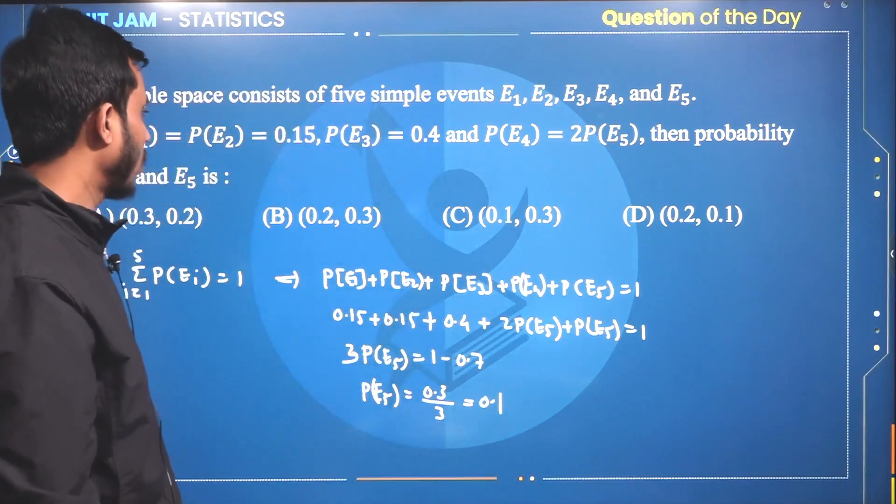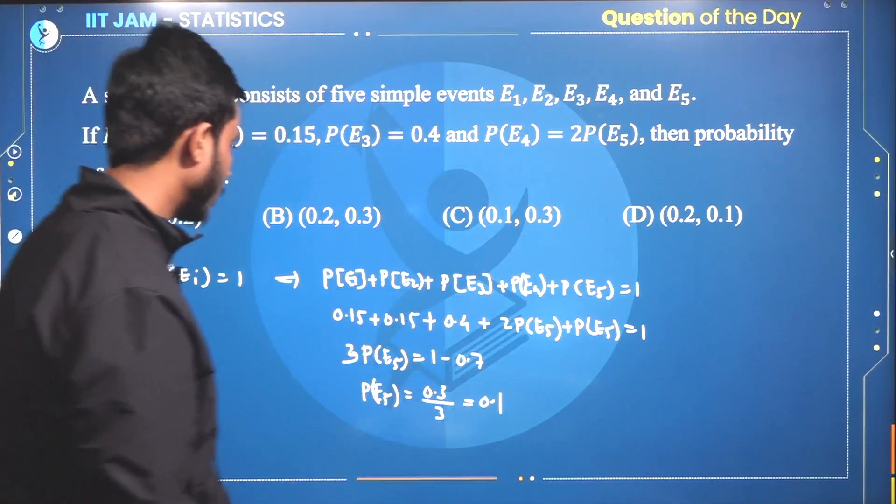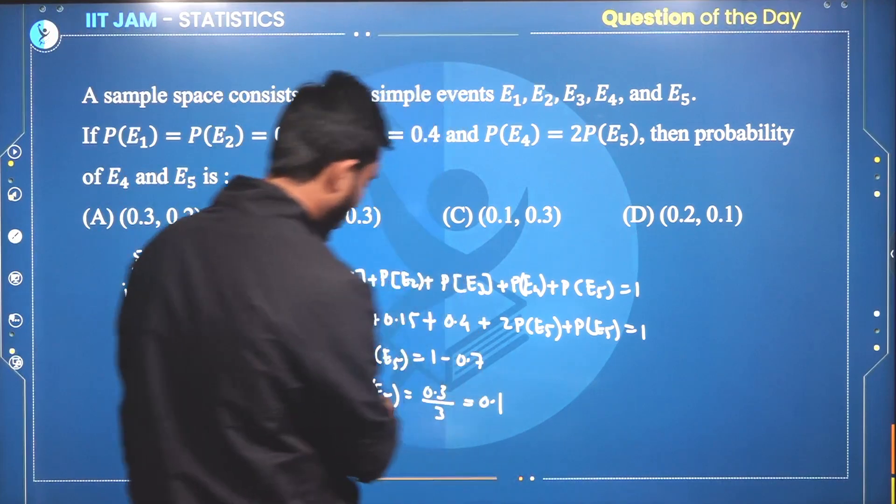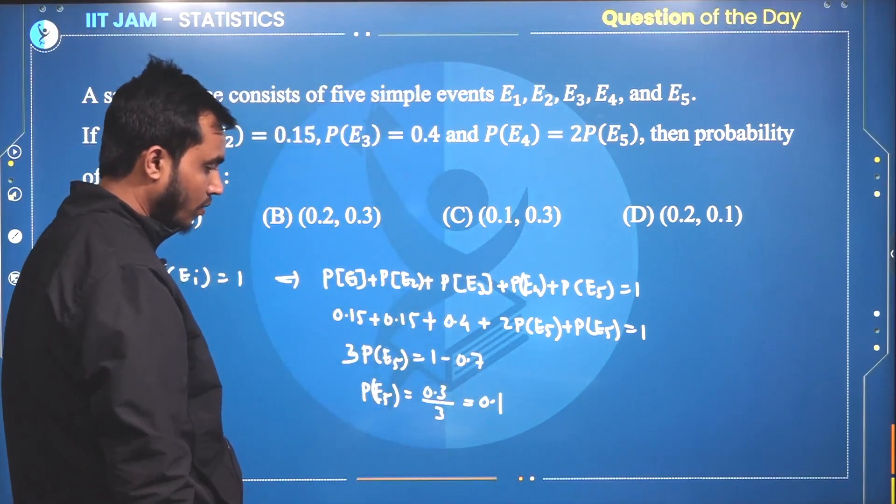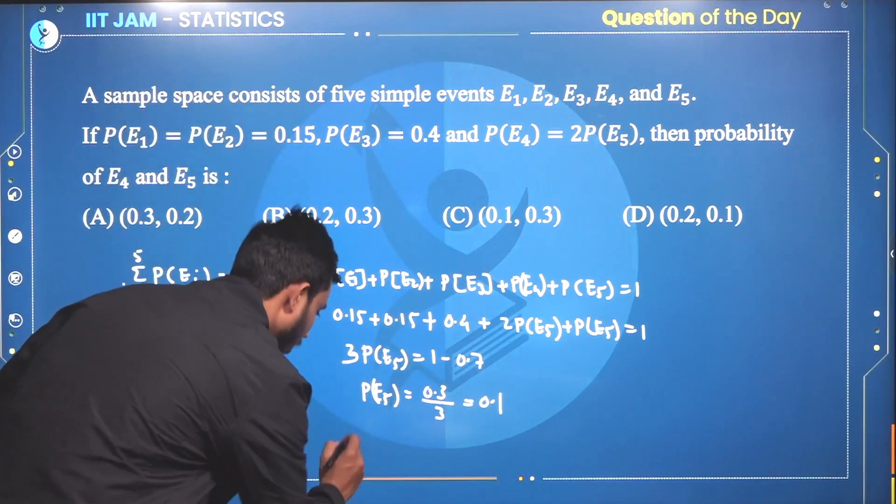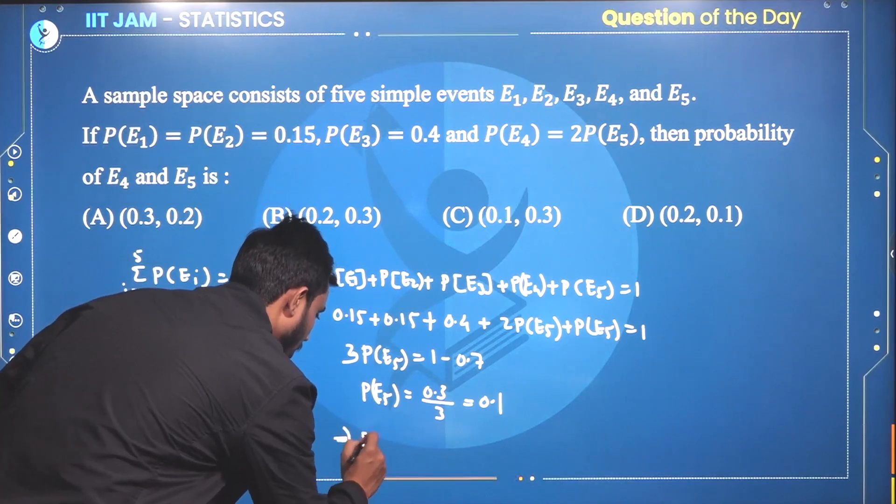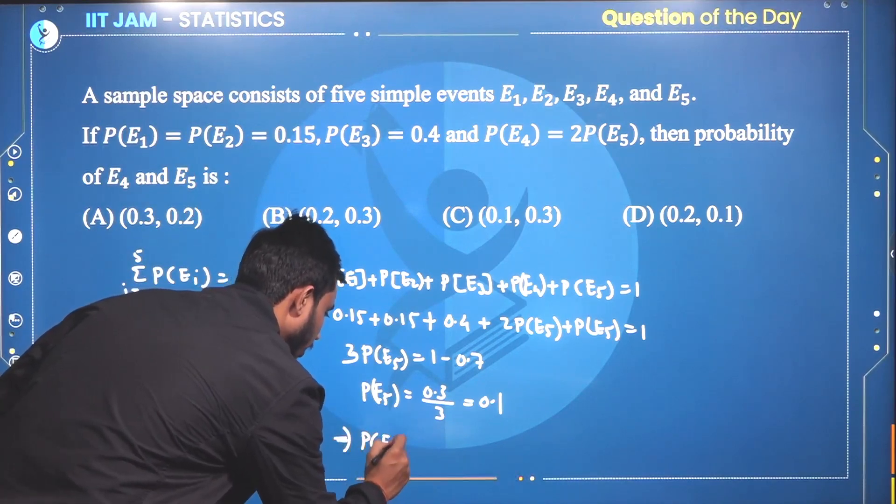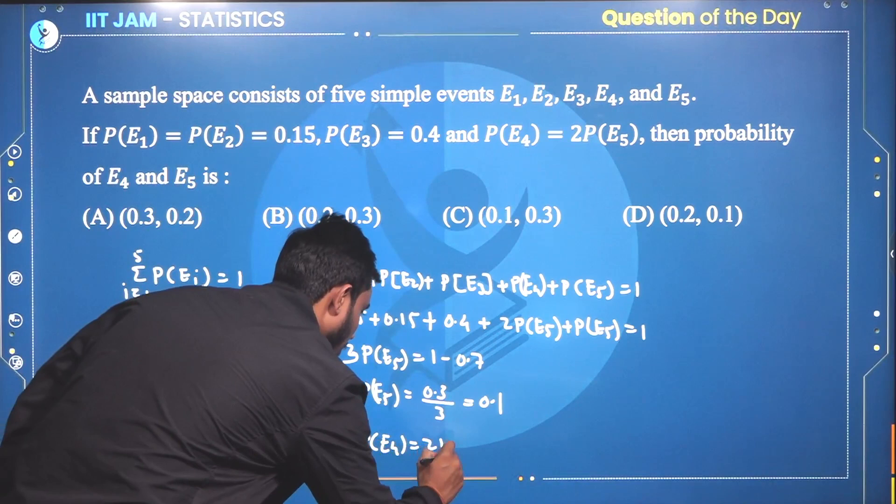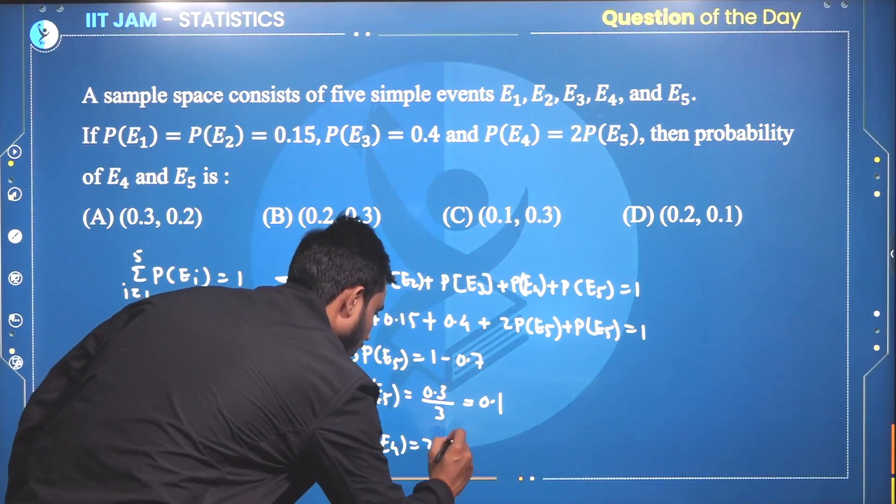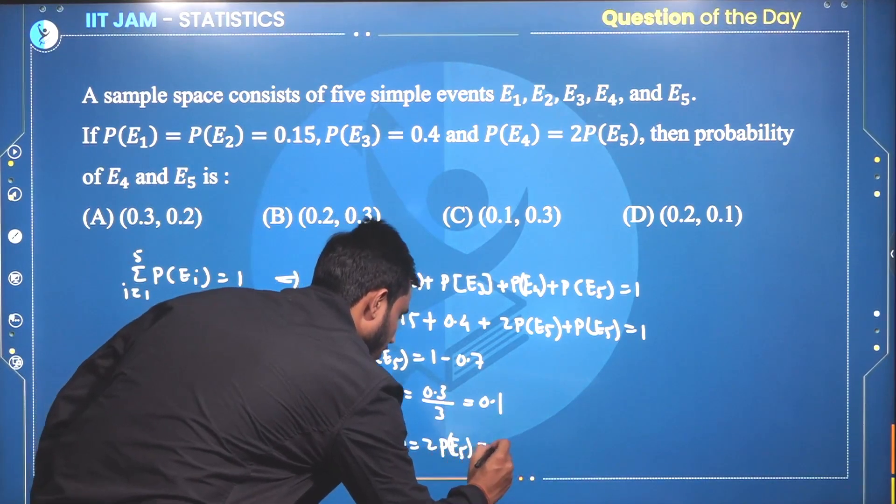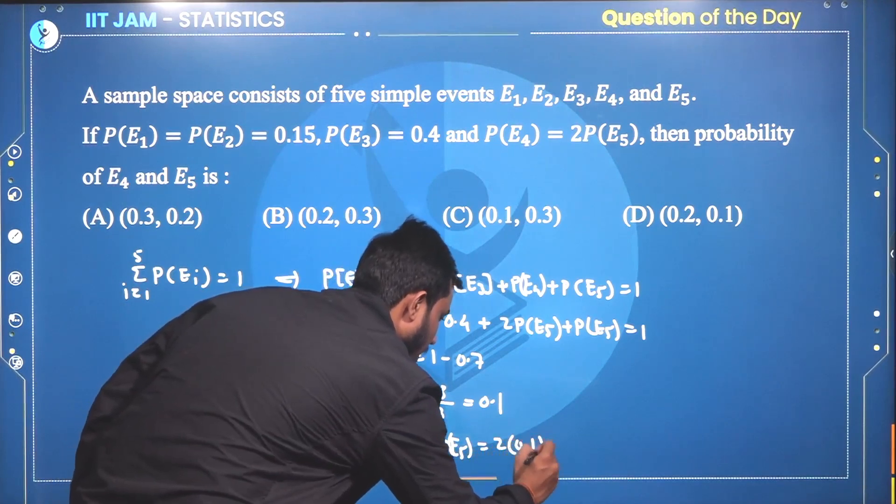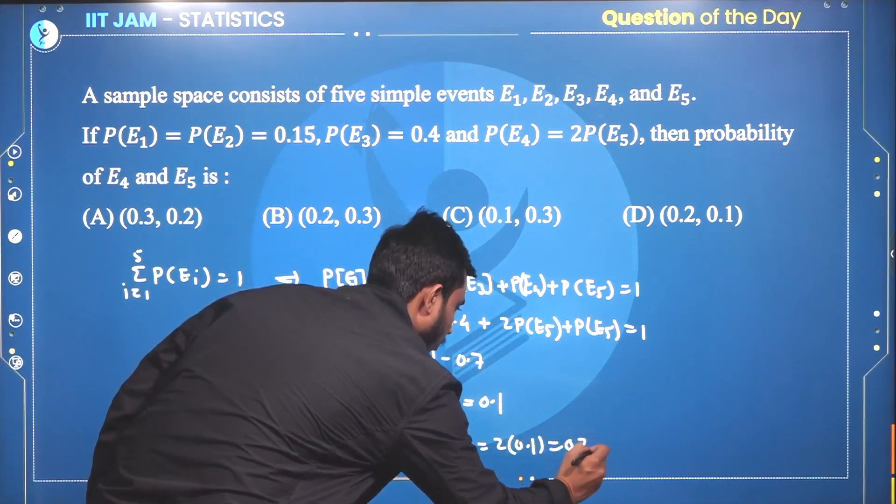So your option will be—here you can observe that the probability of E5 equals 0.1. We can also say that the probability of E4 is two times the probability of E5, which is two times 0.1, that is 0.2.